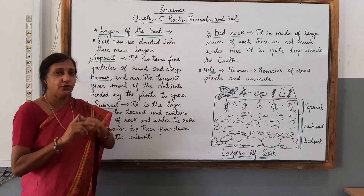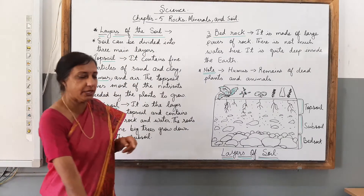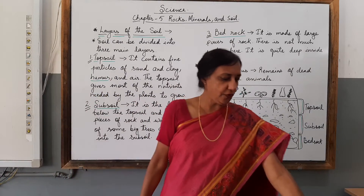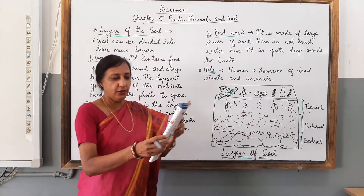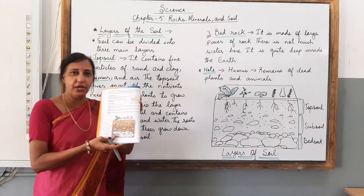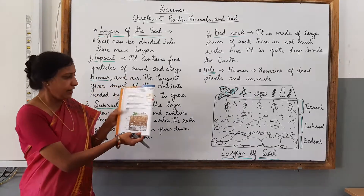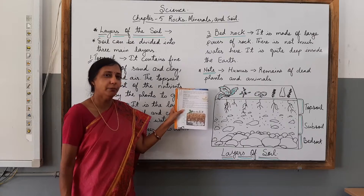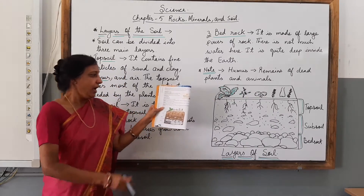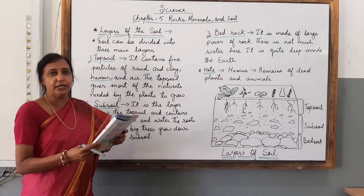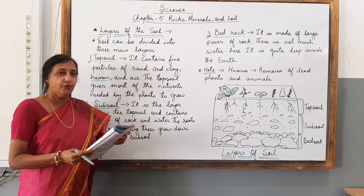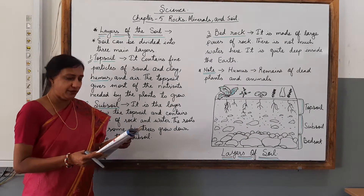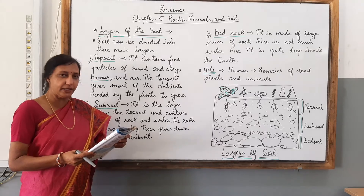Before this, children, you must remember that we have already done about the composition of soil. Here on this page we are studying and I have made the same diagram for you on the board. You have already learned that soil is made up of gravel, sand and clay particles.